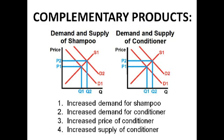Moving on to complementary products, which are products that are generally bought together, like shampoo and conditioner. If there's an increase in demand for shampoo, there's an increase in demand for conditioner because they're bought together. This means the increased demand for conditioner leads to an increased price of conditioner, leading to an increased supply of conditioner. For any two complementary products, an increase in demand for one leads to an increase in demand for the other, an increase in price, and an increased supply.